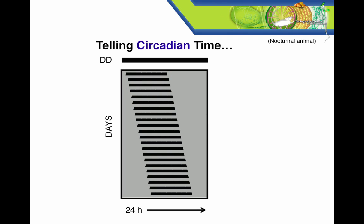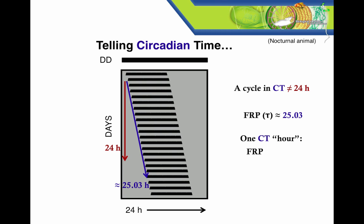If circadian time is based on the free-running period, a cycle through subjective day and night rarely, if ever, is equal to 24 hours. You see here, if we measure the free-running period of this organism, a cycle of subjective day and night equals 25.03 hours. As circadian biologists, we still want to divide that cycle into units of time, so we generate circadian hours. And we do that by taking the FRP, in this case 25.03, and dividing it by 24. In this example, we get 1.04. So each circadian hour is equal to 1.04 conventional clock hours. Thus, there are 24 circadian hours in a subjective day-to-night cycle, just as there are 24 real hours in an Earth day.